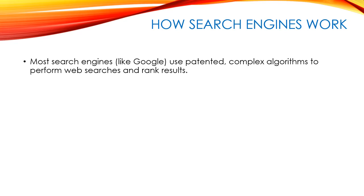The actual data for these searches is obtained by something called web crawlers, which are autonomous programs that seek out web pages they haven't seen before and gather information about those web pages. They're autonomous, which means they run by themselves on a server and are constantly looking for new information that has recently appeared on the internet.